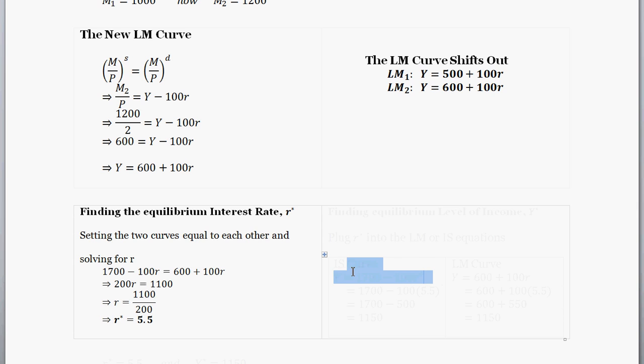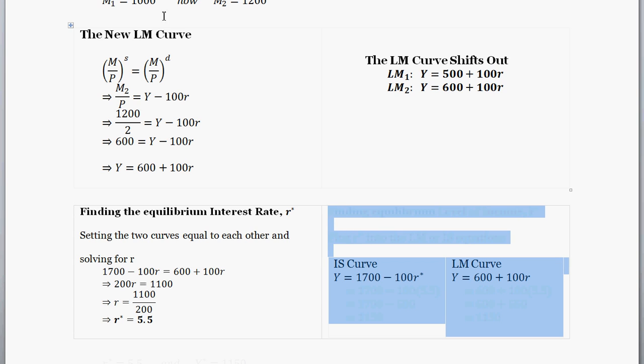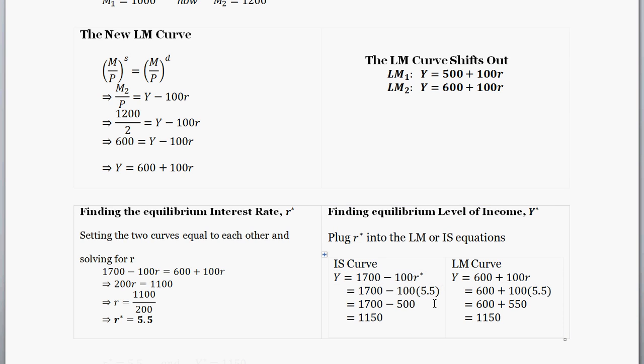So how then do we find equilibrium output? How do we find Y star? Well, we plug our equilibrium interest rate back into either IS curve or LM curve equation. It doesn't matter because if you plug it into either one, you'll get the same solution. So plugging 5.5 into the IS curve equation that we found previously, we find equilibrium output or income of 1150.